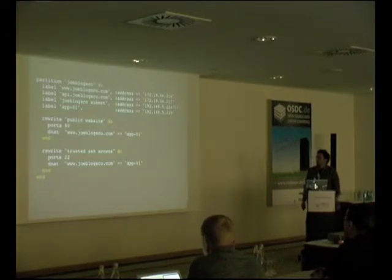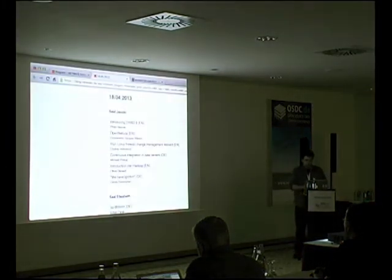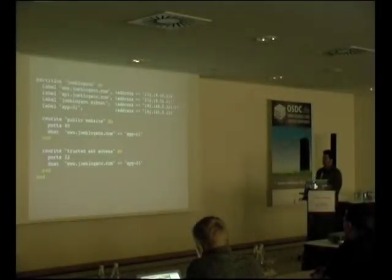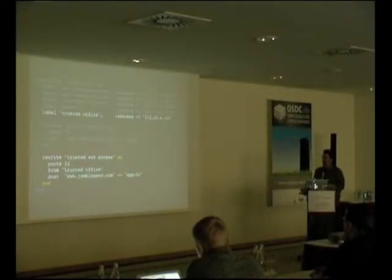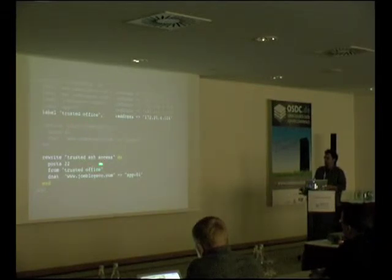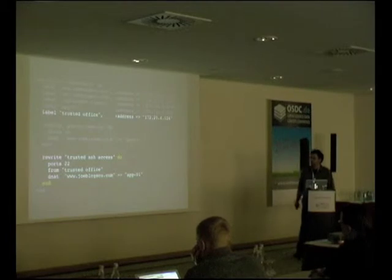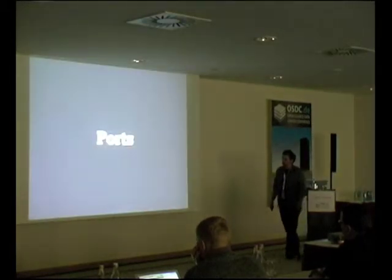We can also add trusted SSH access with further IP restrictions. Adding a trusted office label and referencing it in a rule will generate that specific restriction. You just go 'from trusted office,' it refers back to the label, and generates the correct rule.